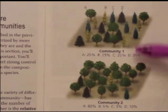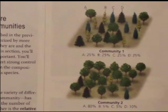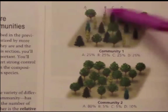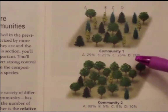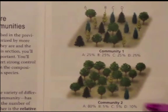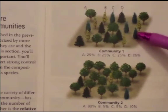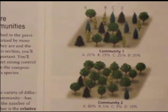You should be able to look at two pictures and identify the richness — for example, both have four species — and then assess the relative abundance. You might make an intuitive guess about which is more diverse, but really be familiar with the terms that describe diversity.